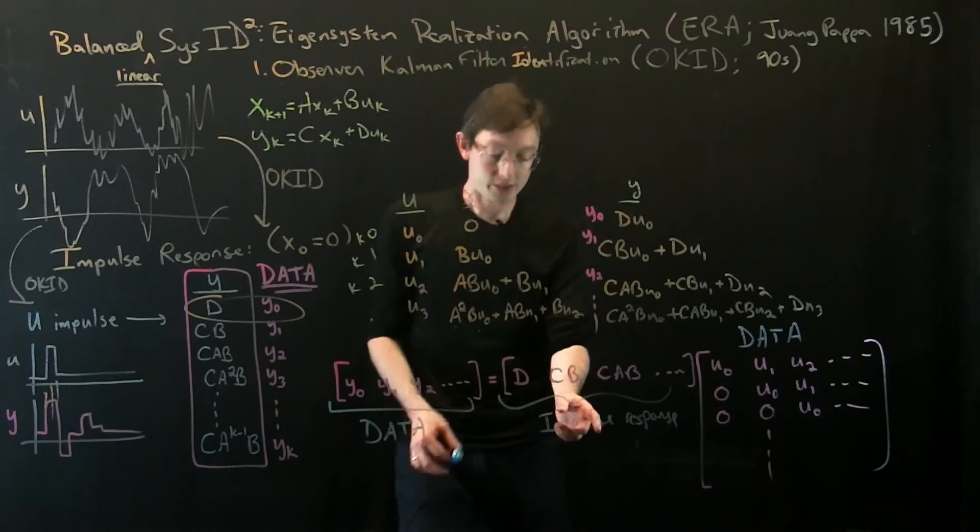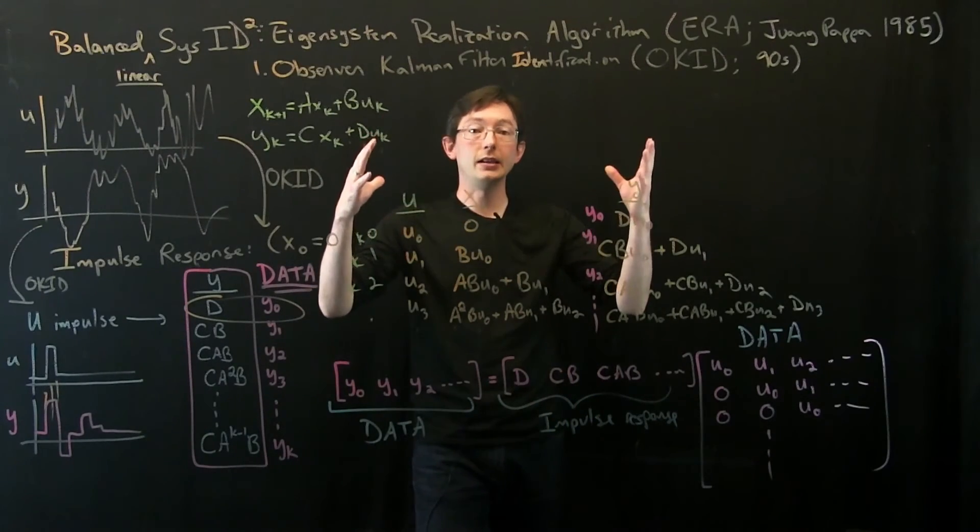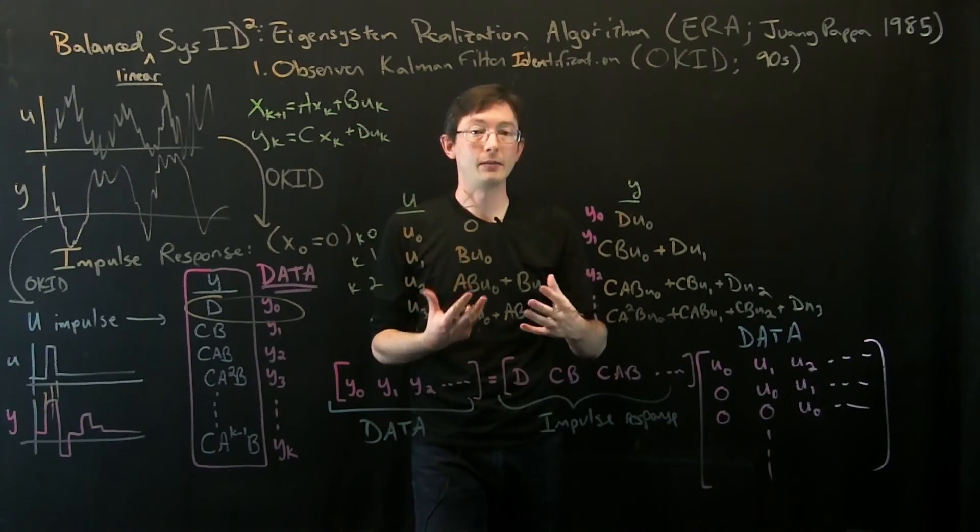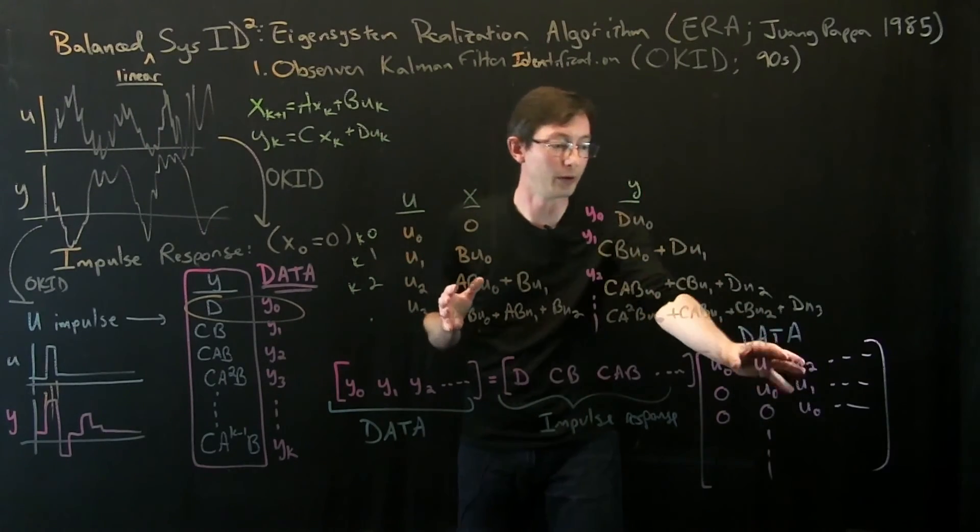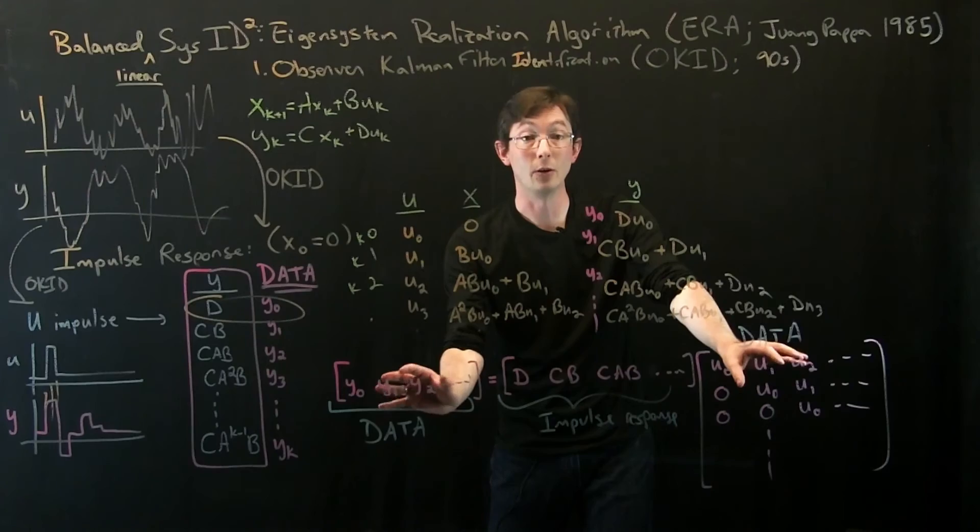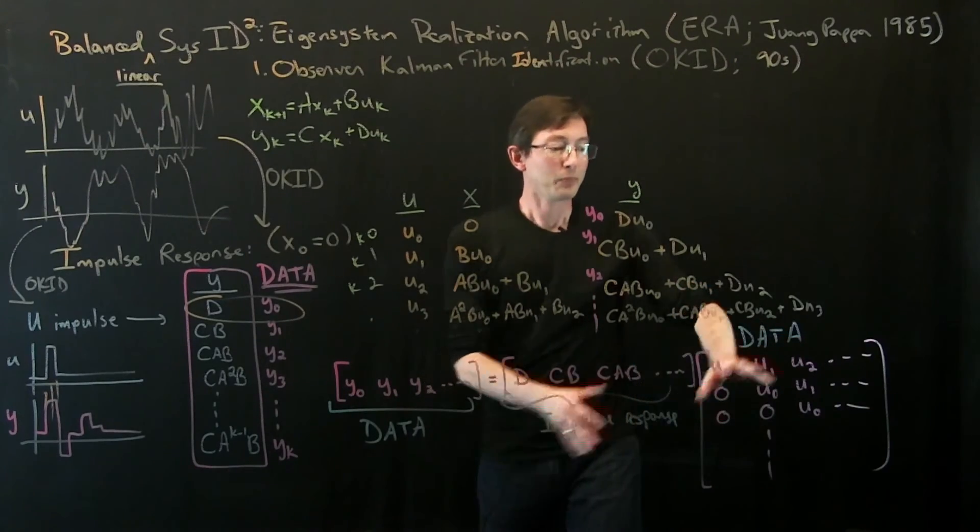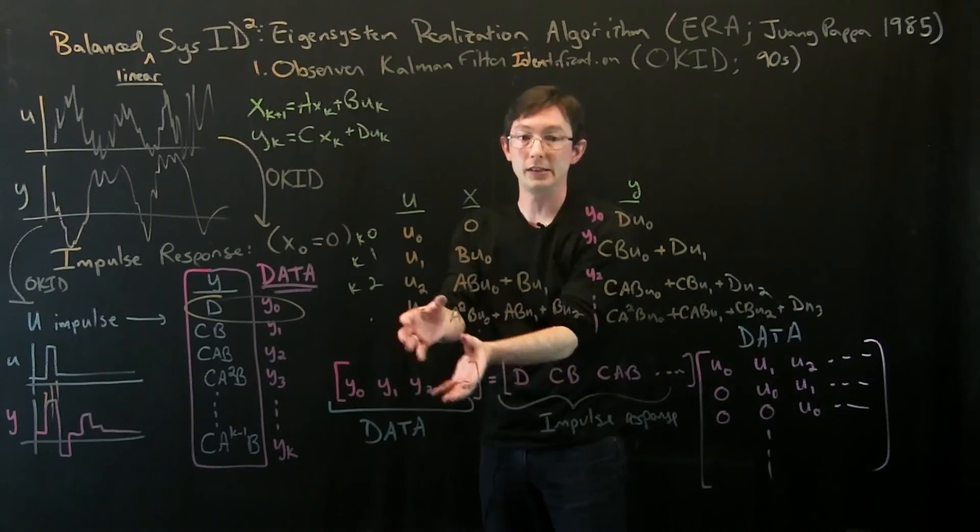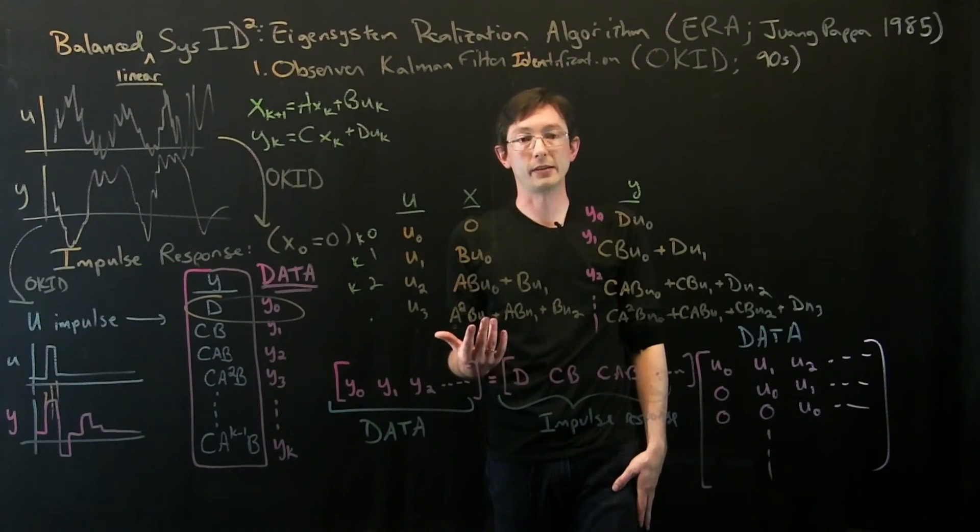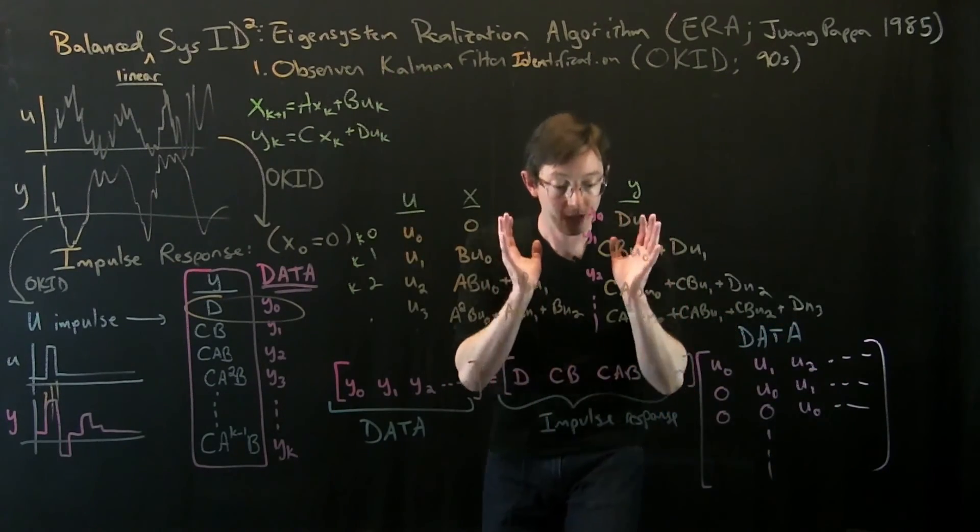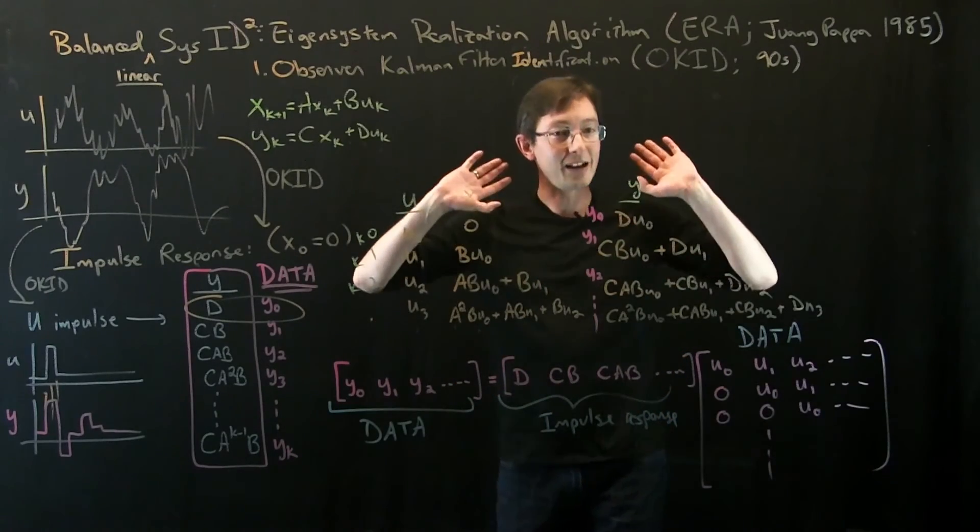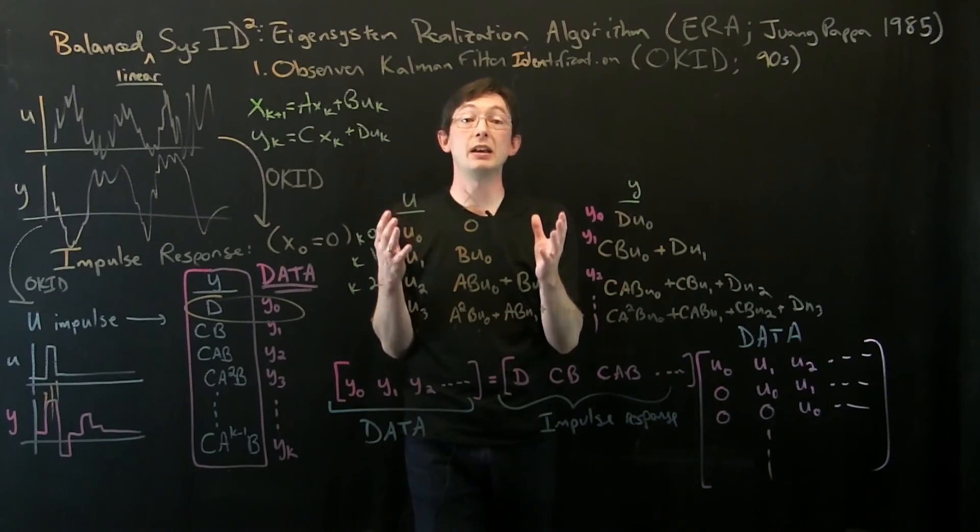So basically what OKID does is it's an optimal way, kind of knowing that there's going to be noise and disturbances in your system, it's an optimal way knowing that this and this are both going to be noisy and bad and corrupted, of kind of inverting this u matrix and solving for this impulse response. It's kind of this denoising pseudo-inverse using a Kalman filter that solves for the impulse response. That's at least the big picture what's happening.